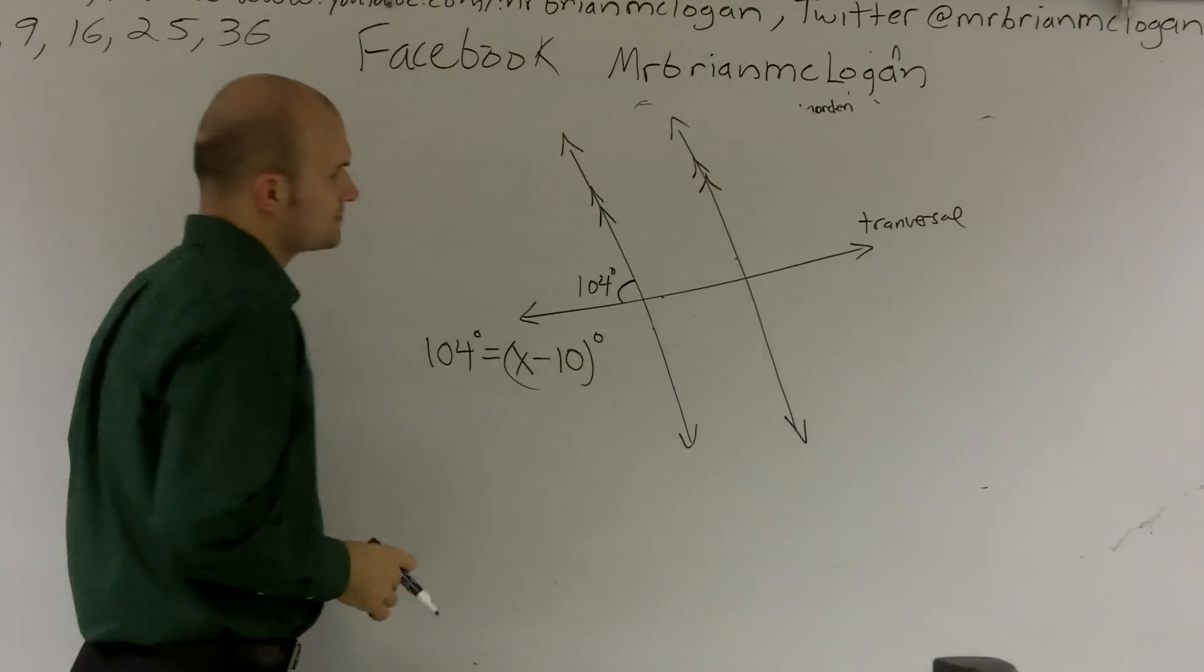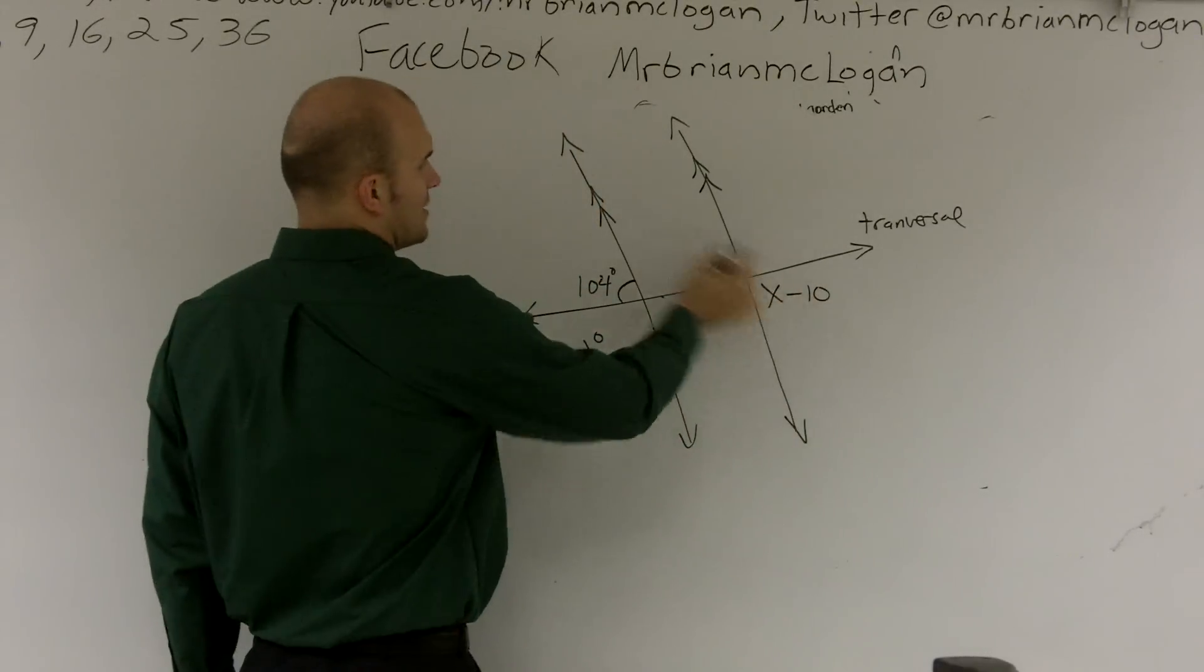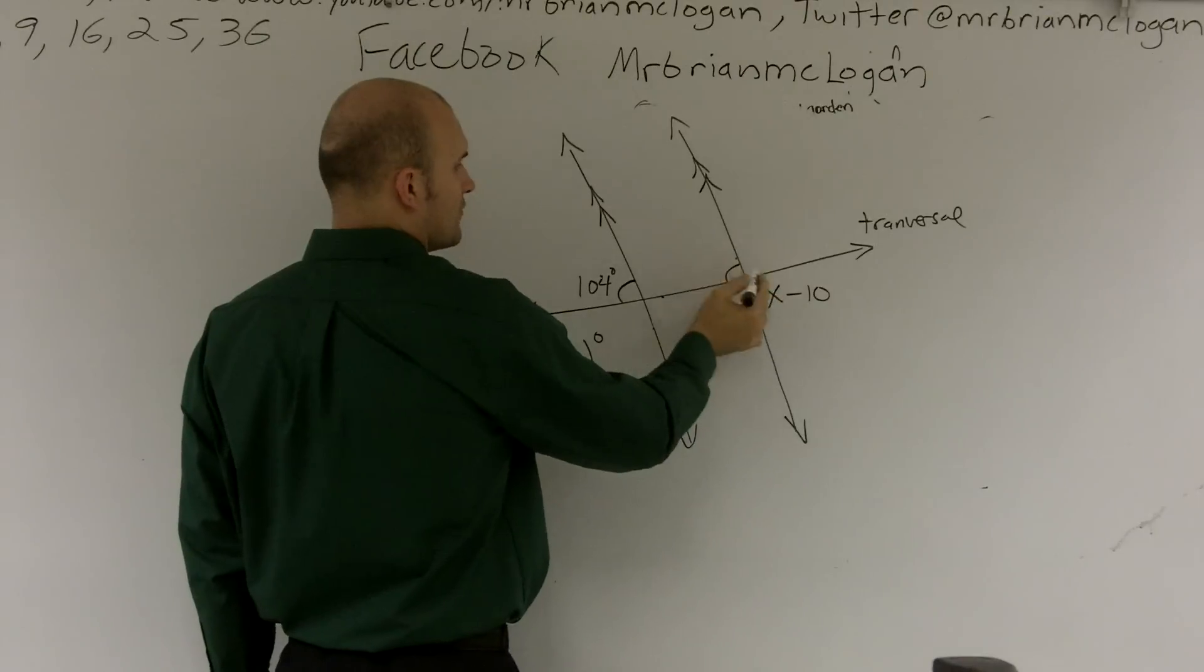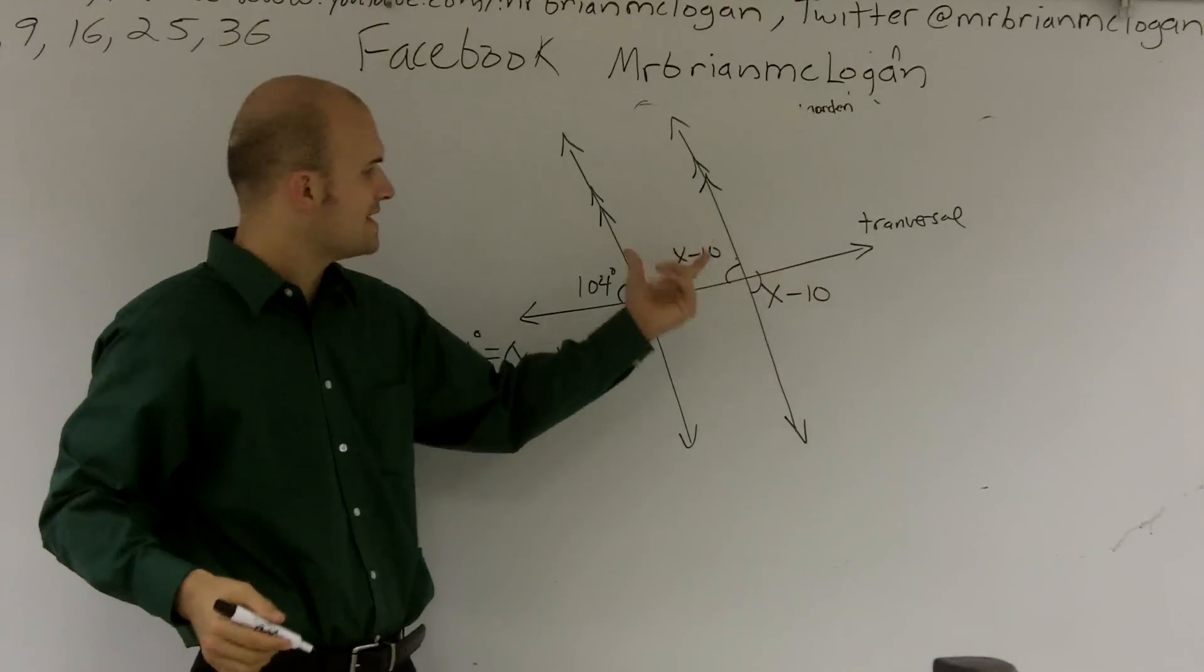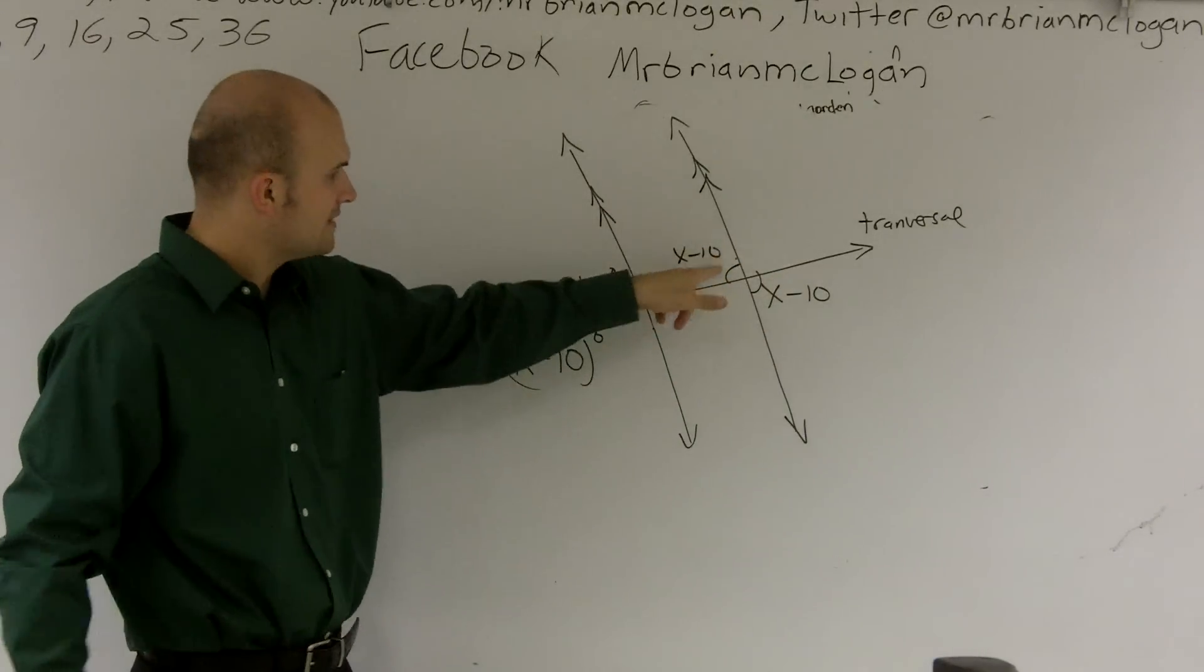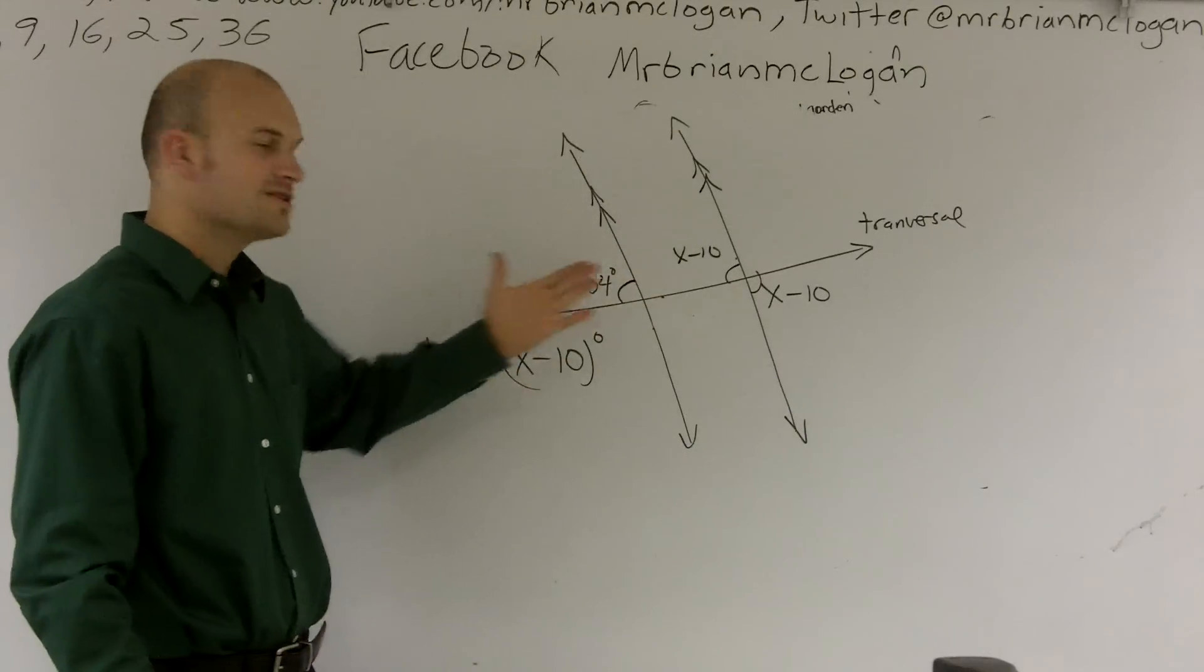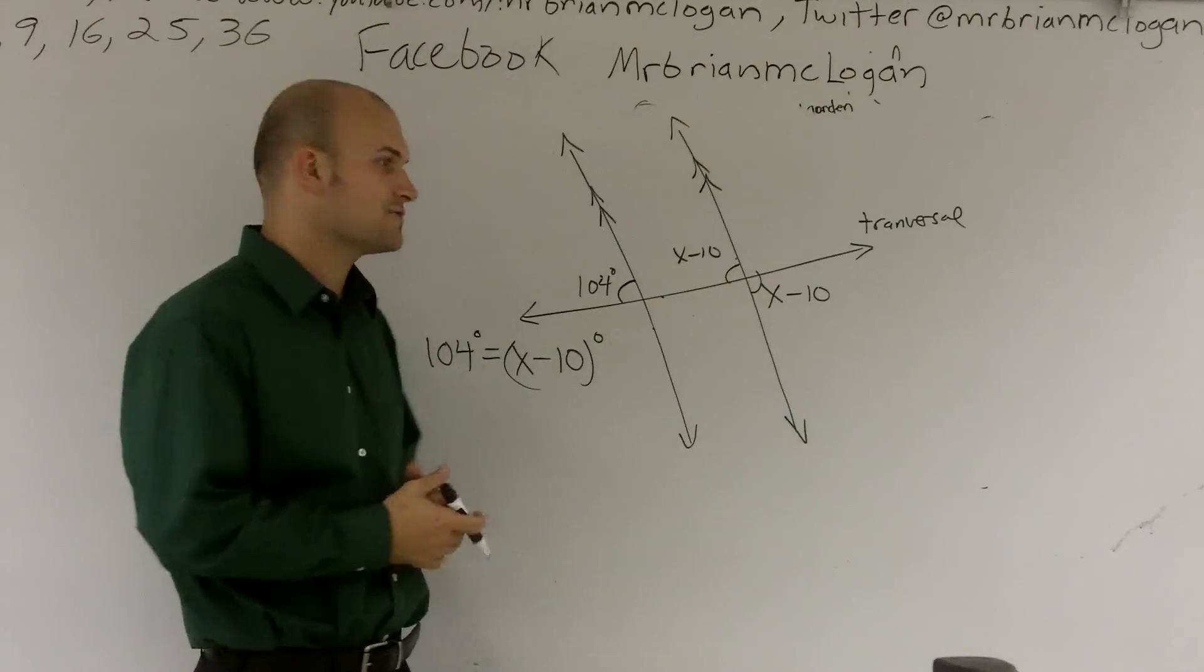The other way we can look at it is you can also say these two angles are vertical angles. And since these two angles are vertical angles, now I have corresponding angles on the other side of the transversal. These two are also corresponding angles. So again, I could write the same equation. So it really doesn't matter which way you want to use corresponding angles for this problem.